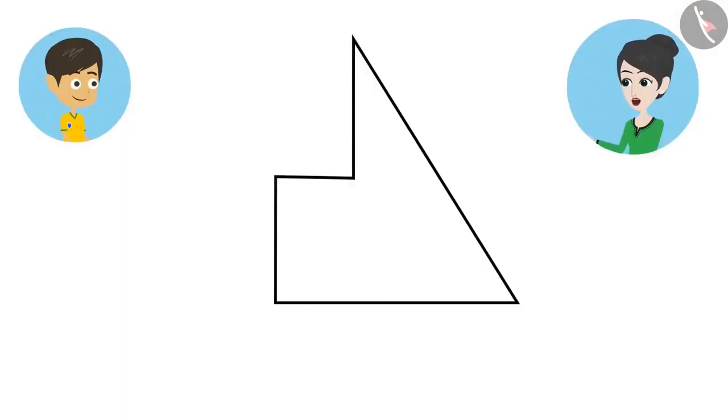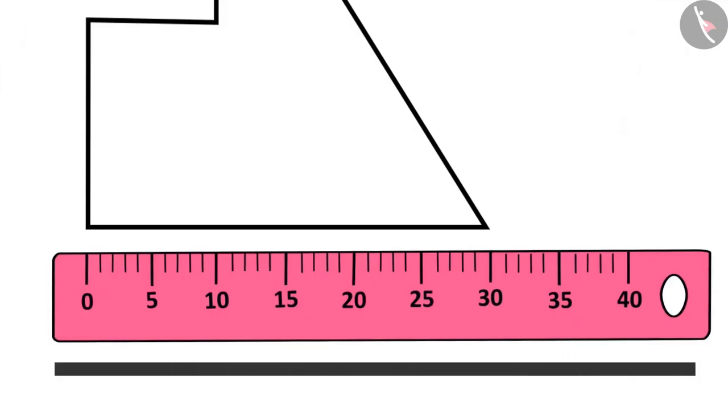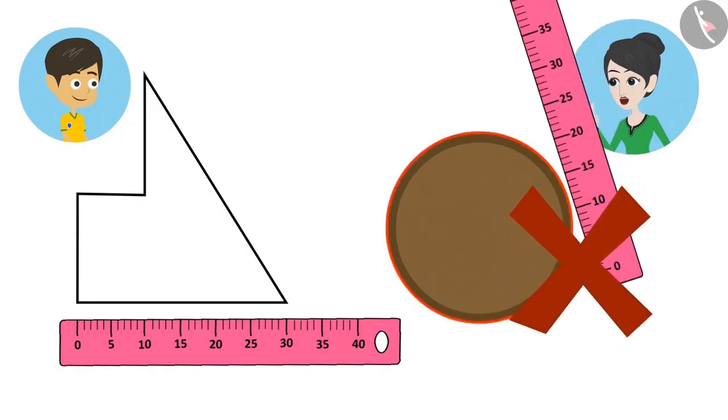The edges of shapes with straight lines can be measured with a scale because the scale is also straight. But you cannot measure a shape which has a curved boundary with a scale.